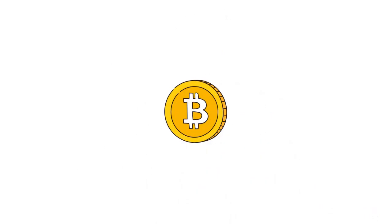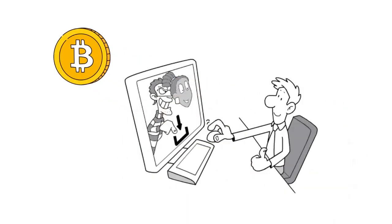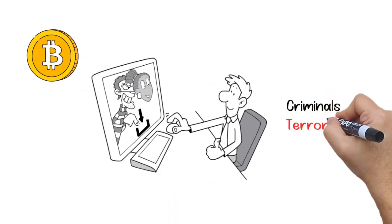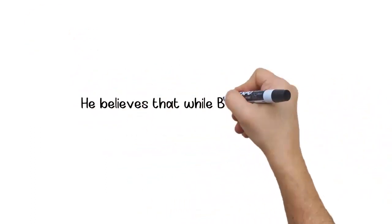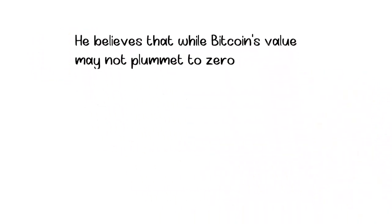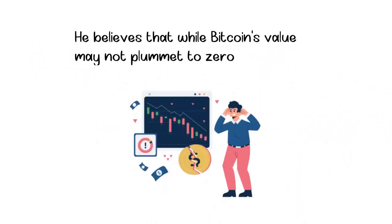Rickards' crypto skepticism also extends to Bitcoin, which he refers to as a utility token used by criminals, terrorists, money launderers, and tax evaders. He believes that while Bitcoin's value may not plummet to zero, it is likely to experience a significant decline.